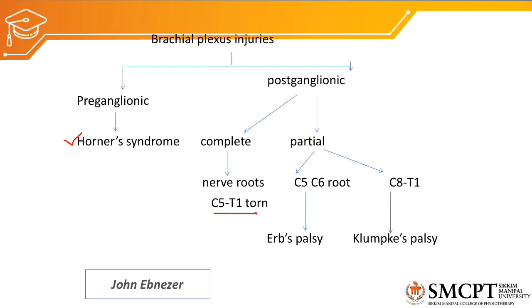Postganglionic injury can be complete or partial. Complete means all nerve roots from C5 to T1 are torn. If it is partial and involves C5 and C6 nerve roots, it is called Erb's palsy or injury of the upper trunk. If C8 and T1 nerve roots are partially involved, it is called Klumpke's paralysis.